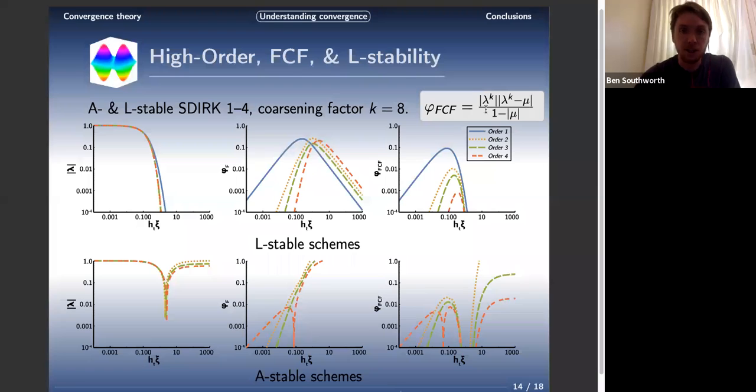There's also something interesting with FCF relaxation in high order. If we look at the L-stable plot, we have orders one through four. Blue is order one, red is order four integration, ESDIRK. What we notice is that they have the same peak, more or less, but the peak moves to the right with higher order. It kind of scoots further and further right. This is a function of the higher order method being a better approximation to the exponential closer to the origin.